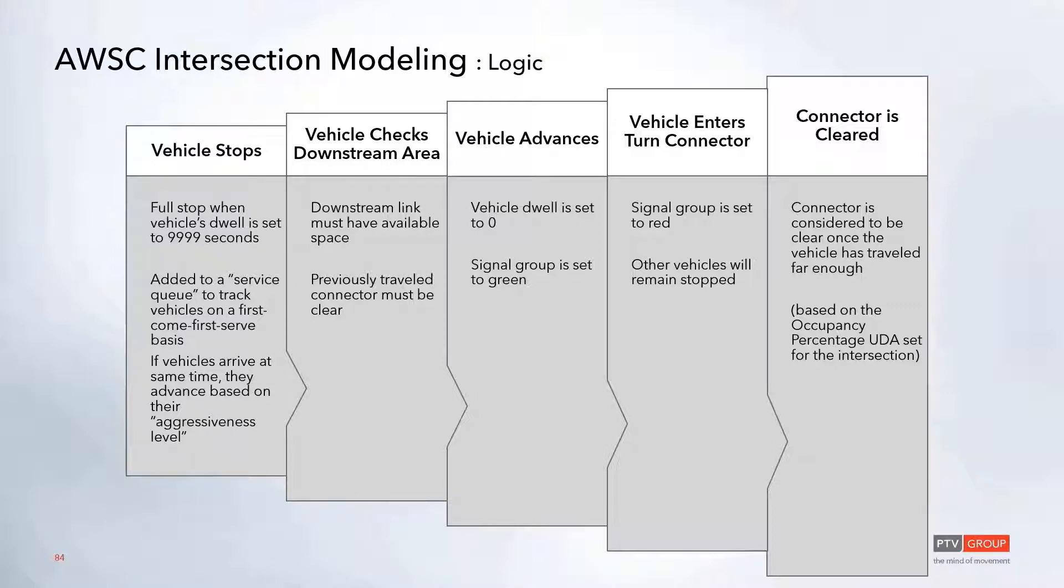From there, the vehicle is then going to check the downstream area. It's both going to check the downstream link to make sure it has enough space so that when it completes its turn, it has somewhere to go. And then it's also going to check the connector that the last vehicle traveled on to make sure that that has been cleared out.